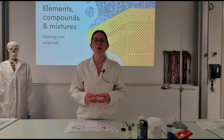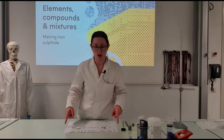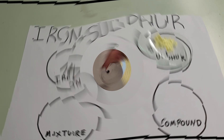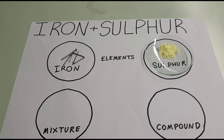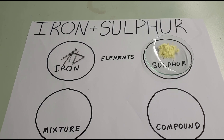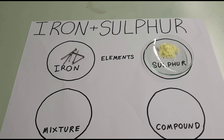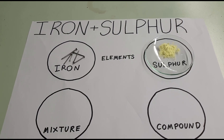First of all we're going to start off by looking at the two elements iron and sulfur. As you can see, iron is a shiny silver metal, and sulfur in the powder form is this beautiful bright yellow color. So the two elements look very different from each other.